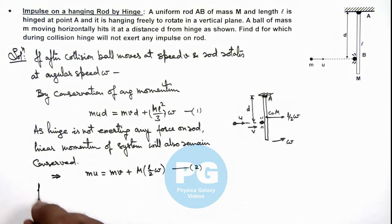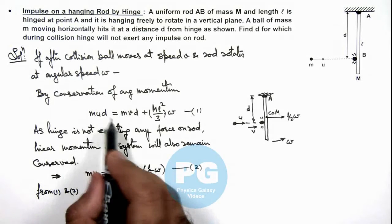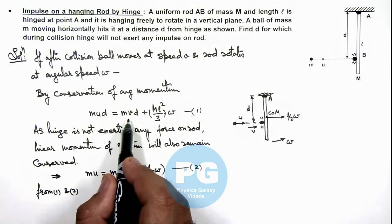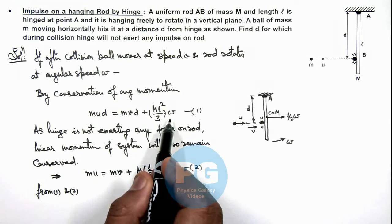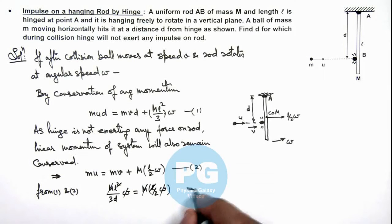Now here we can write from equations 1 and 2, here we can rearrange the terms as m u minus m v d, we write as m l square by 3 d multiplied by omega, which should be m into l by 2 omega. Here m omega gets cancelled out, then l also gets cancelled out, and it will result the value of d is equal to 2 l by 3.